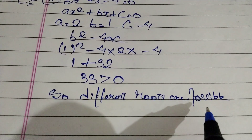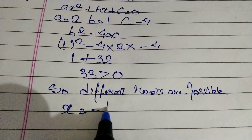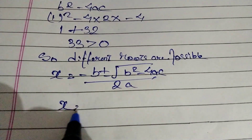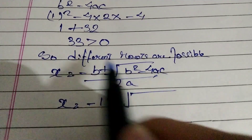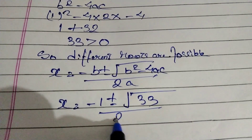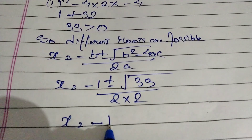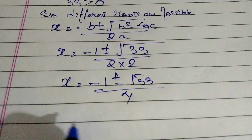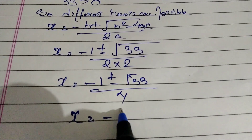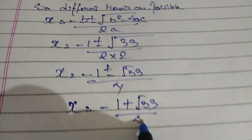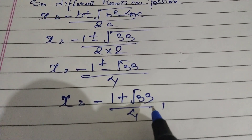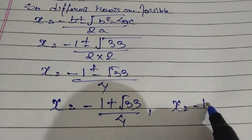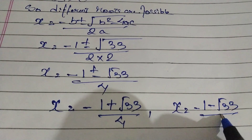The formula is x = (−b ± √(b²−4ac)) / 2a. So x equals minus b (which is 1) plus minus root of 33, divided by 2 into a (which is 2), so divided by 4. Therefore x equals (−1 + √33) / 4 as the first answer, and x equals (−1 − √33) / 4 as the second answer. Since root 33 cannot be simplified, we leave it as is.